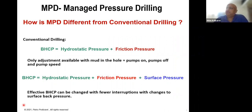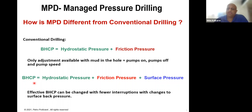In MPD, you have another function — you have hydrostatic pressure, friction pressure, and also surface pressure. These three parameters are in your arsenal to control bottom hole circulating pressure (BHCP), which is the pressure at the bottom of the well while circulating. This gives you additional tools to control your wellbore pressure and manage it more effectively.